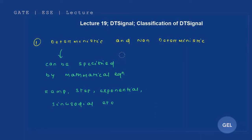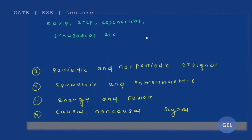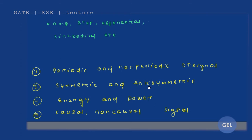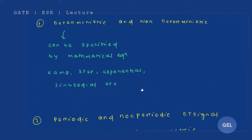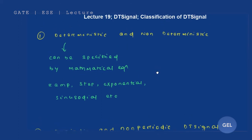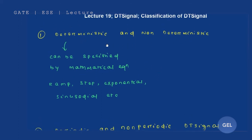Welcome to GATE ESE lecture. We are in lecture number 19 of Signal and System, and this is your second module on discrete time signals. We are going to start the classification of discrete time signals — same as continuous time signals — dividing into deterministic and non-deterministic, periodic and non-periodic, symmetric and anti-symmetric, energy and power signals, and causal, non-causal, and anti-causal signals.